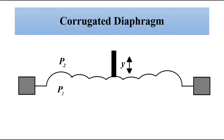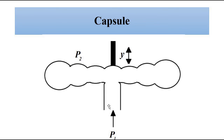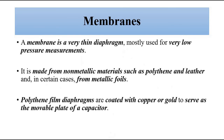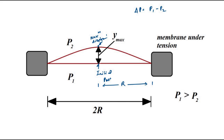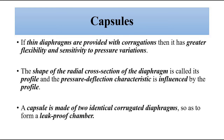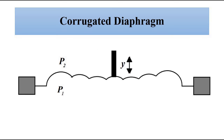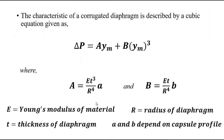This is the basic operating principle of the corrugated diaphragm and the capsule. Two corrugated diaphragms combined together form a capsule, and the relationship between pressure difference and displacement expresses how pressure is measured using this device.